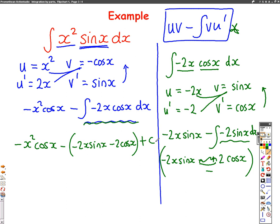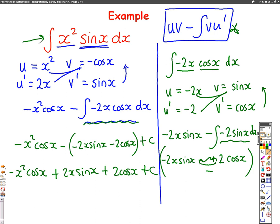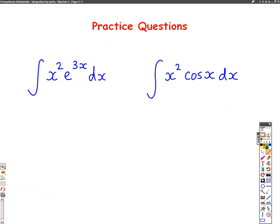Don't forget to put a plus c at the end because there's no limits. My only job left is to get rid of these brackets. So it will be minus x squared cos x. The two minuses cancel out to become plus 2x sin x. And again, the minuses cancel out to give plus 2 cos x, plus c at the end. That's the answer when you integrate x squared sin x using integration by parts twice. I've got two questions now for you to have a go at, similar to the ones you've just done. Good luck with these and see how you get on.